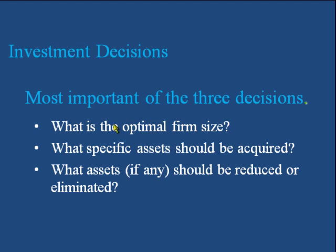The finance manager has to decide what should be the optimal firm size, which is represented by the total value of assets of the firm. After finalizing the optimal firm size, it should be decided what specific assets should be acquired. Normally there are two main types of assets: current assets and fixed assets. The finance manager decides the optimal level of each, and whether any asset should be reduced or eliminated.